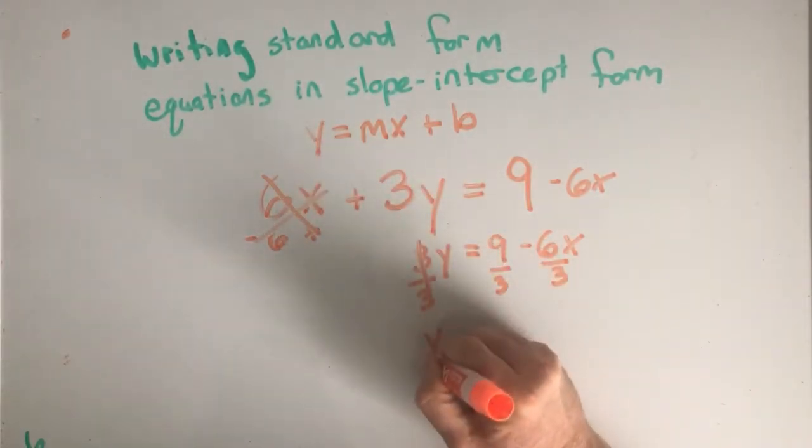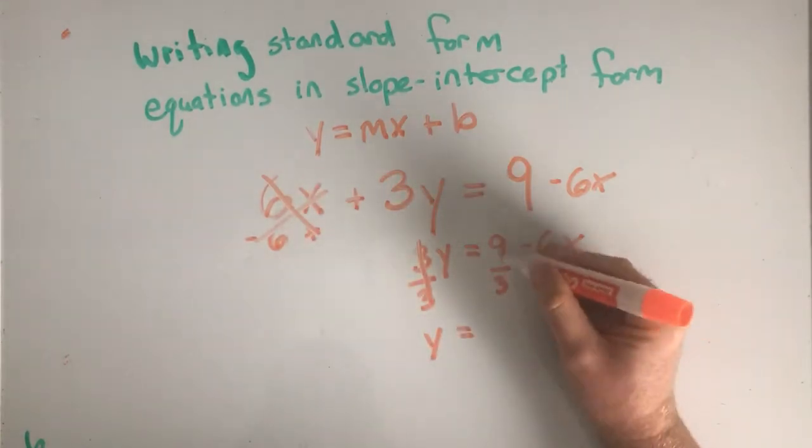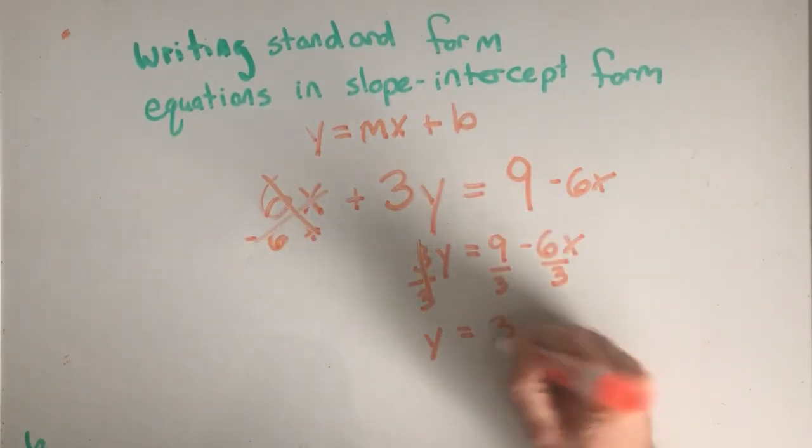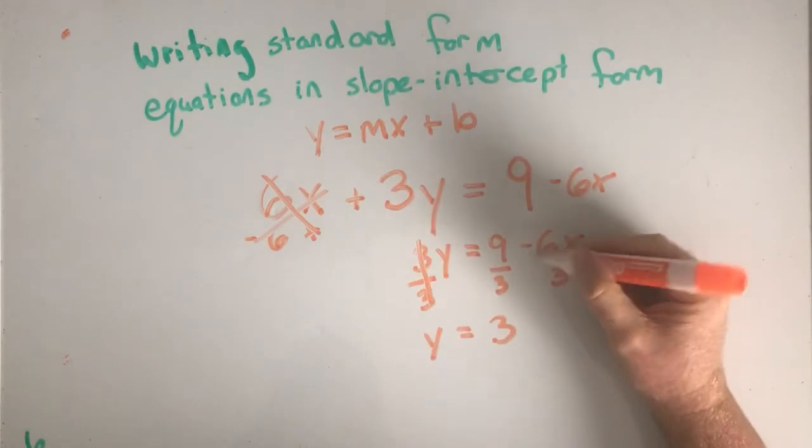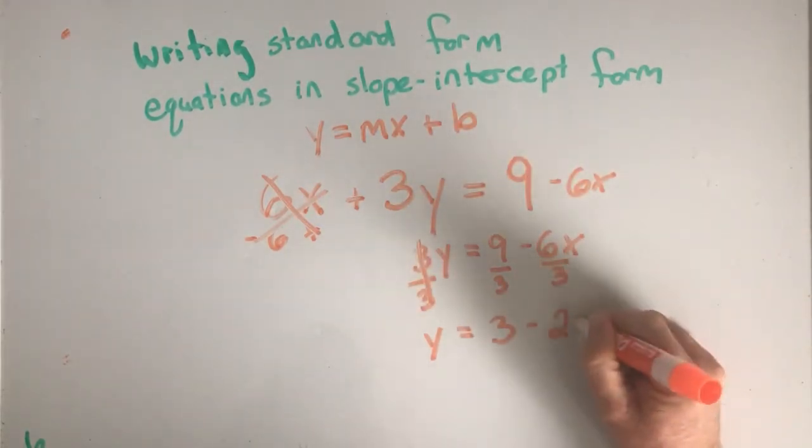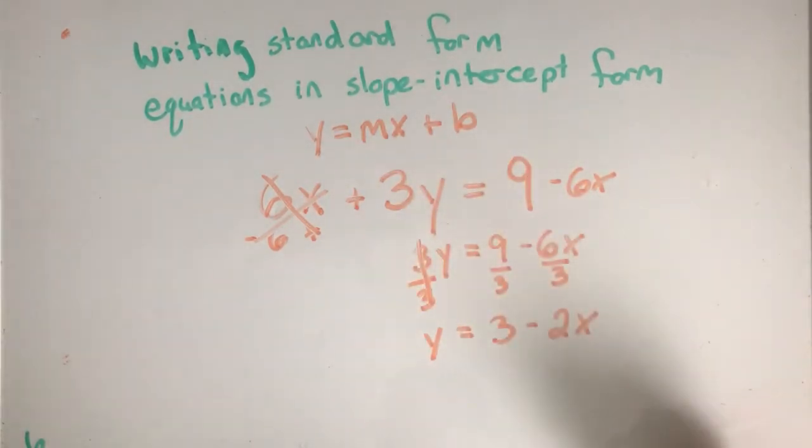And I'm left with y equals 9 divided by 3 is 3. Negative 6 divided by 3 is negative 2, so it's negative minus 2x.